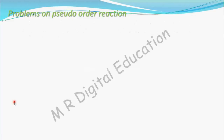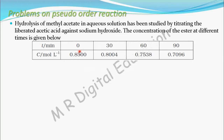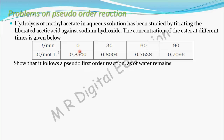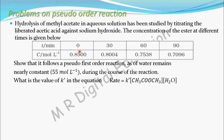Let's see a problem on pseudo order reaction. Hydrolysis of methyl acetate in aqueous solution has been studied by titrating the liberated acetic acid against sodium hydroxide. The concentration of the ester at different times is given in the form of a table. We need to show that it follows a pseudo first order reaction, given that water remains nearly constant at 55 mol per liter during the course of the reaction. We also need to find the value of k dash in the equation: rate = k dash × [CH₃COOCH₃] × [H₂O].